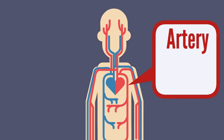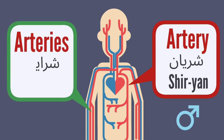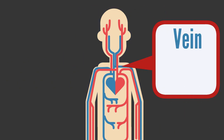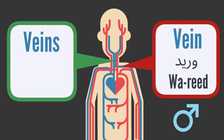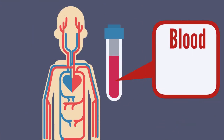Next is intestines: amma, amma. Appendix: zayde, zayde. Heart: alb, alb. Artery: sheryan, sheryan. And arteries are sheryaan. Vein: woreed, woreed. And the plural form is awryde. Next is blood: dumb, dumb.